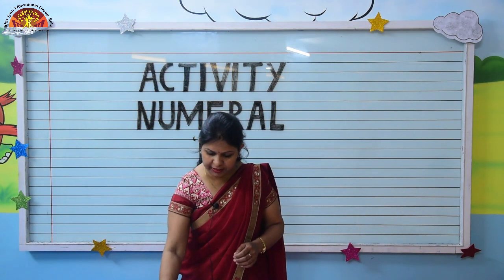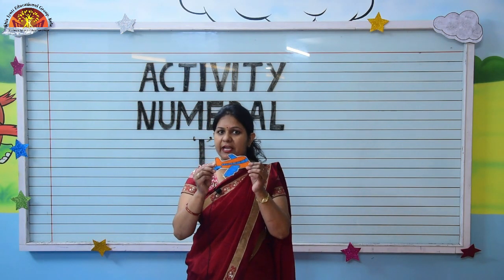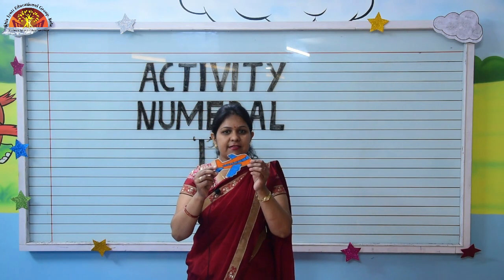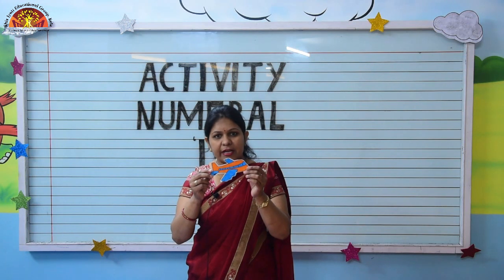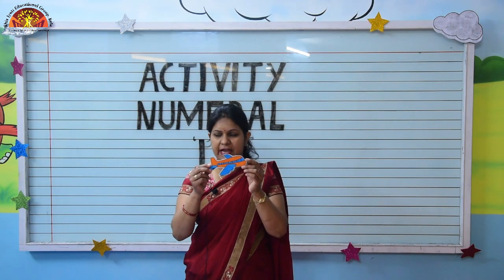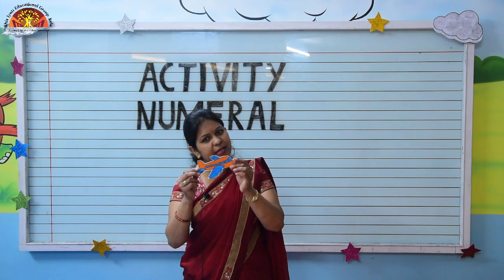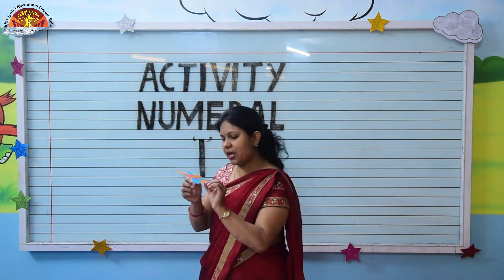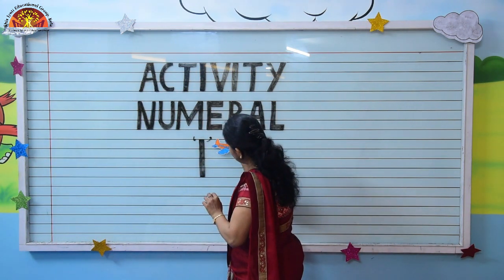So now tell me, kids — what is this? This is an aeroplane. This is one aeroplane. How many aeroplanes do I have? I have one aeroplane. So we will paste it here.